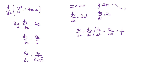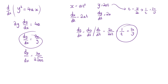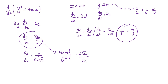Rearranging, t equals y over 2a, so 1 over t equals 2a over y - confirming both methods agree. If you know the parameter t, the gradient is 1 over t; if you know the y-value you can use 2a over y. For the normal line, the gradient is the negative reciprocal, so that would be minus y over 2a, or equivalently minus t.